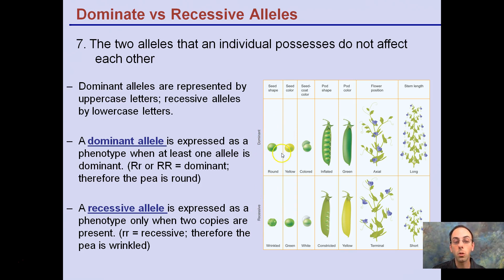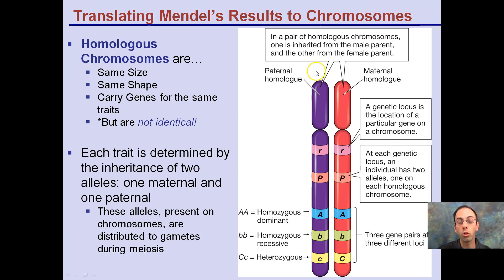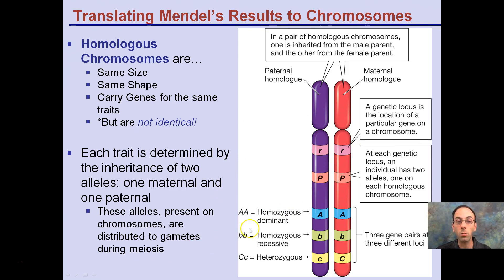We don't know if a round-phenotype individual is homozygous dominant or heterozygous, but we know there's at least one dominant or round allele. Our homologous chromosomes are the same size and shape and carry genes with the same traits, but they're not necessarily identical. One comes from dad, one from mom — that's why we're 2N diploid organisms. The alleles present on chromosomes are distributed to gametes during meiosis, which is why there are so many different possible combinations.